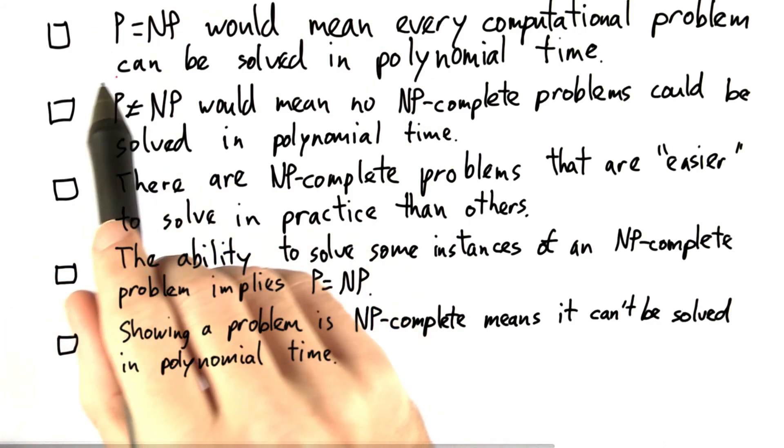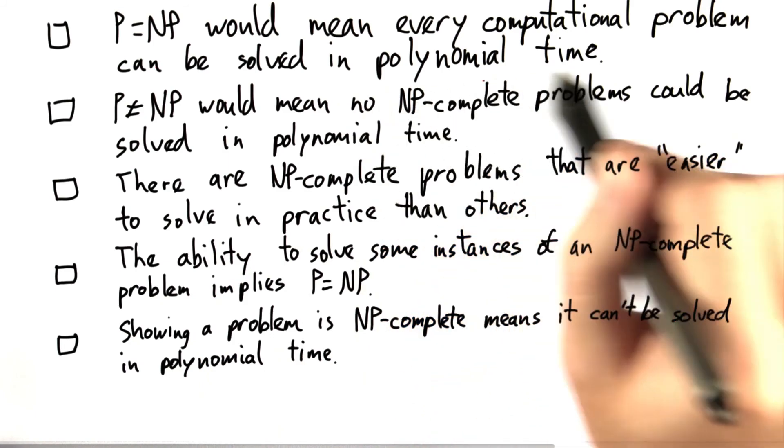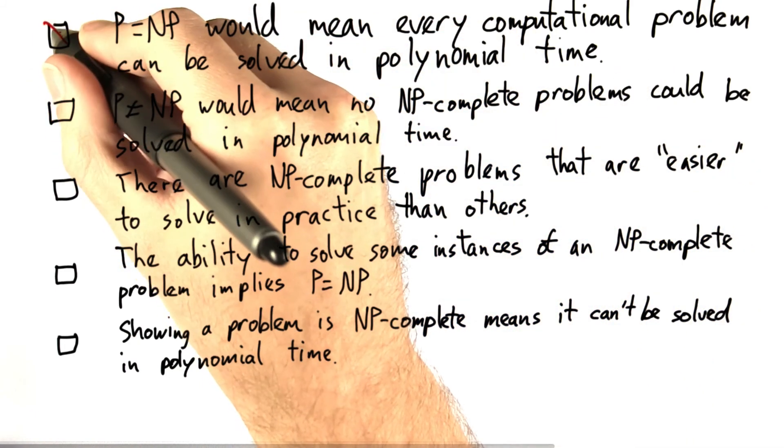So let's look at these from the top down. First, if P equals NP, would that mean that every computational problem could be solved in polynomial time? Well, no, actually it wouldn't.